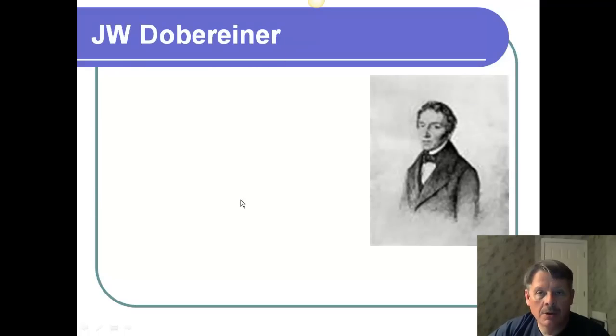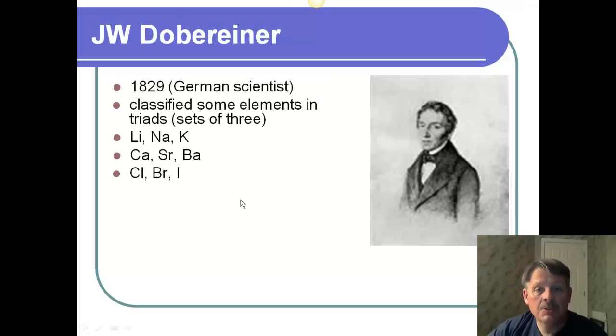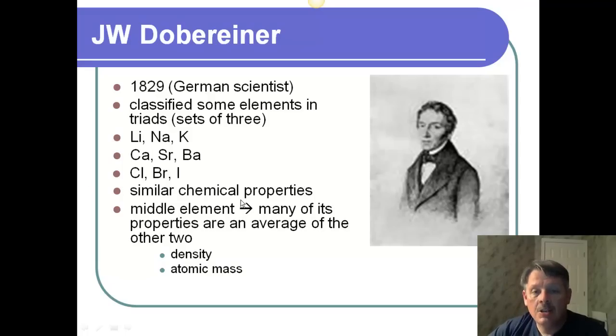There was a guy named Döbreiner, and I'm not sure I pronounced that right, but he was a German scientist back in the 1800s, and he classified some elements in triads in groups of three. And what he noticed is that each one of these had similar chemical properties. For example, if I look at lithium, sodium, and potassium, one of the things he noticed was each one of them bonds once with chlorine. He also noticed that when you look at the middle element, it is kind of an average between chemical properties of lithium and potassium, average density, average atomic mass, etc.